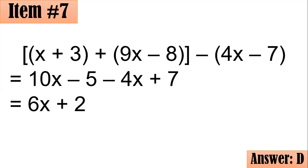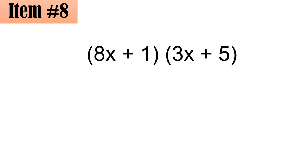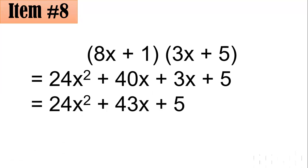Moving on to number 8. Find the product of 8x plus 1 and 3x plus 5. Using the FOIL method — First: 8x times 3x is 24x squared. Outer: 8x times 5 is 40x. Inner: 1 times 3x is 3x. Last: 1 times 5 is 5. Combining 40x and 3x gives 43x. The final answer is 24x squared plus 43x plus 5, which is letter B.